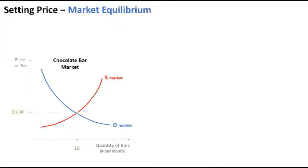This intersection of supply and demand is where the quantity demanded and the quantity supplied are equal. In this case, the price is $3.30 and the quantity demanded and quantity supplied is 10. This is market equilibrium.